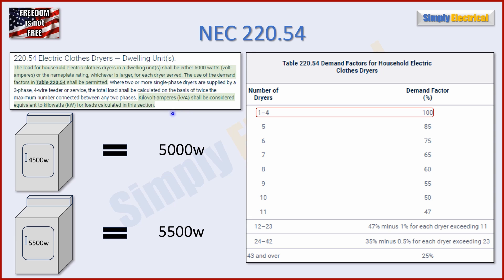Going back to the first sentence: if you have an electric clothes dryer, it shall be either 5,000 watts or the nameplate rating, whichever is larger. So if you have one dryer rated at 4,500 watts, that equals 5,000 watts because you cannot go below 5,000 watts per dryer. But if you have a 5,500 watt dryer, that equals 5,500 watts because it's whichever is larger — so we take the 5,500 in that scenario.